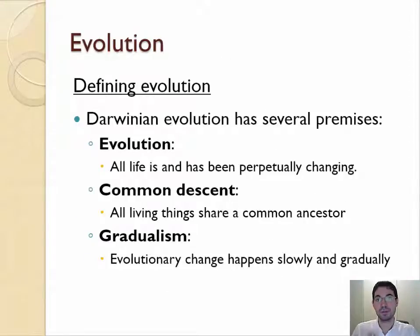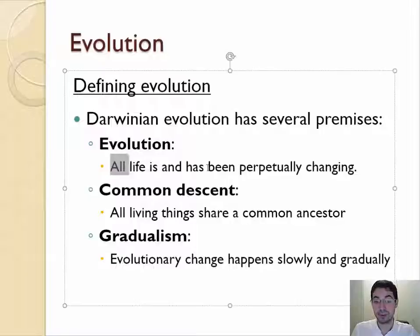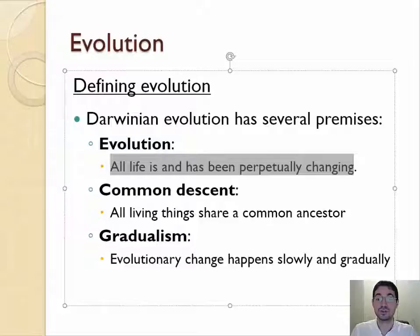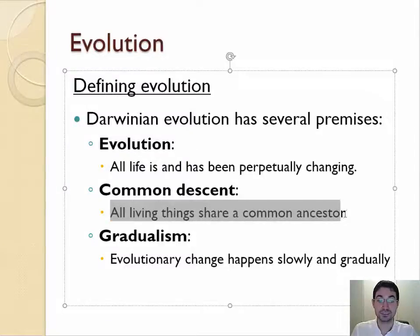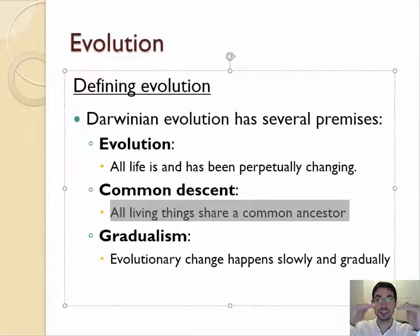Now, Darwin, when he came up with the theory of evolution by natural selection, his theories had a few premises. The first one was that life does evolve — life changes and always has changed based on which animals survive and which don't. This means that all life shared a common ancestor, and as that ancestor moved into new habitats, those populations would have had different variations that are more successful and more likely to survive, causing changes in the generations over time.